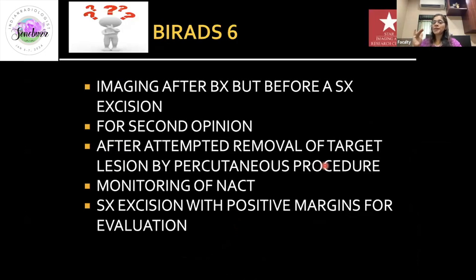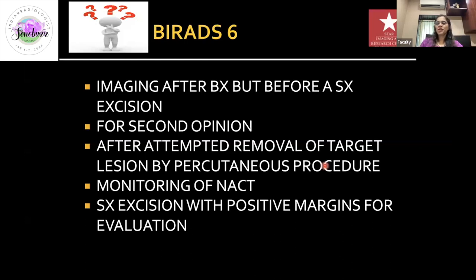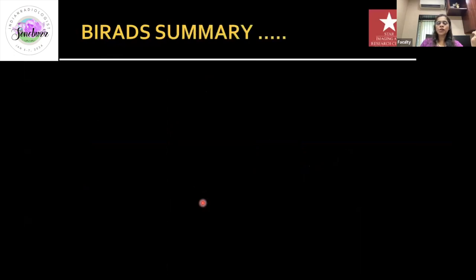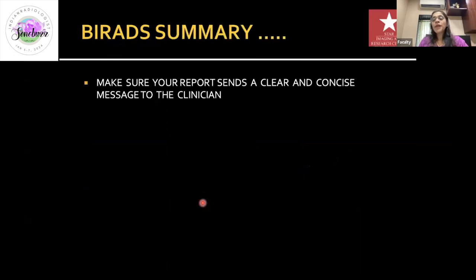BI-RADS 6 is assigned when the patient has biopsy-proven cancer but is imaged again before definitive surgery — for a second opinion, post-neoadjuvant chemotherapy monitoring, or post-surgery with positive margins. Example: a patient clipped prior to neoadjuvant chemotherapy where the mass has completely resolved on follow-up imaging is hook-wire localized for surgical excision — BI-RADS category 6.